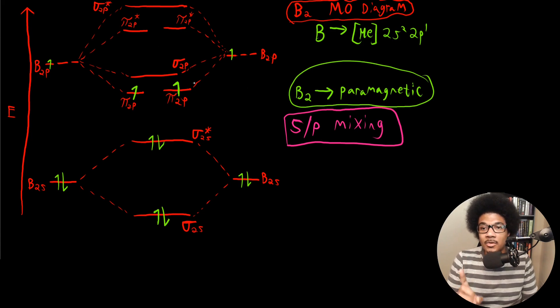So where else will you get this energy ordering? So this energy ordering happens in C2 and it happens in N2. So for B2, C2, and N2, this SP mixing is significant and it's going to affect this energy ordering.